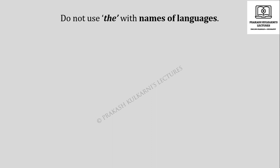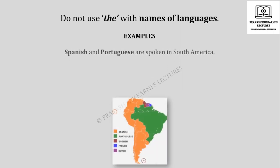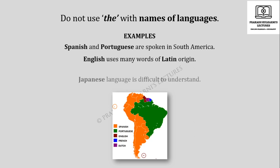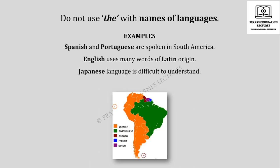Do not use THE with the names of languages. There are so many languages in the world, and we should not use article THE before any language. For example, 'Spanish and Portuguese are spoken in South America.' 'English uses many words of Latin origin.' 'Japanese language is difficult to understand.' Here Spanish, Portuguese, English, Latin, and Japanese are all languages.